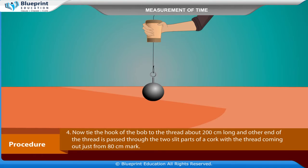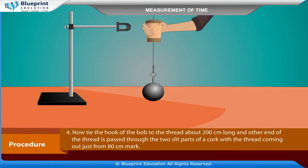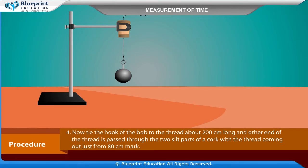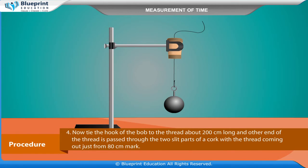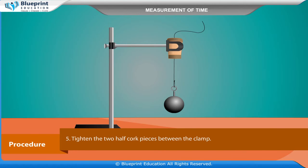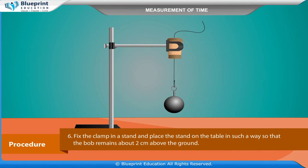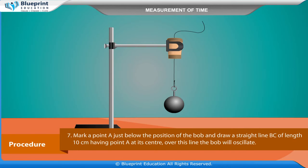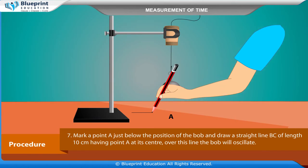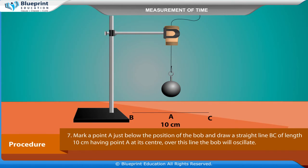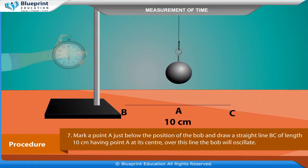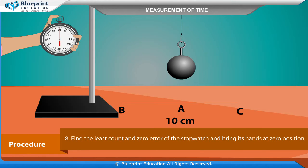Tie the hook of the bob to the thread about 200 cm long and pass the other end of the thread through the two slit parts of a cock, with the thread coming out just from the 80 cm mark. Tighten the two half cock pieces between the clamp. Fix the clamp in a stand and place the stand on the table so that the bob remains about 2 cm above the ground. Mark a point A just below the position of the bob and draw a straight line BC of length 10 cm having point A at its center — over this line the bob will oscillate. Find the least count and zero error of the stopwatch and bring its hands to zero position.